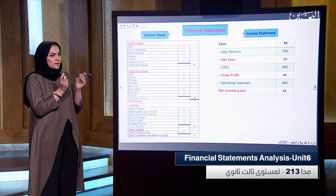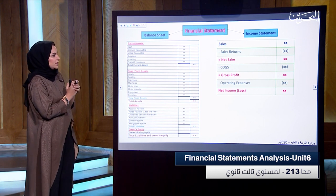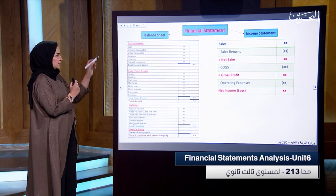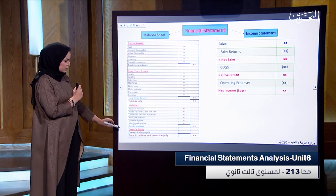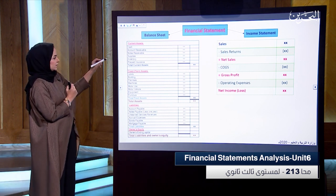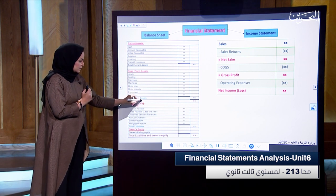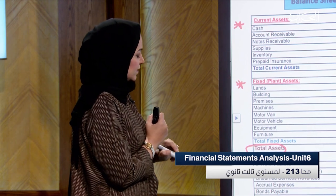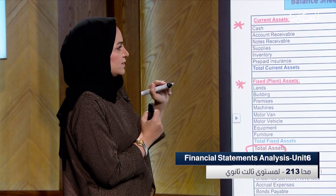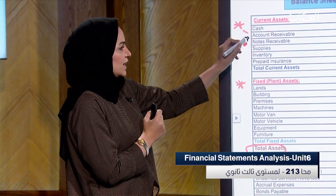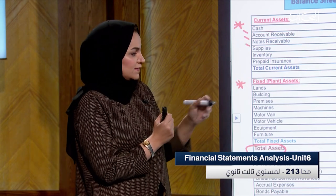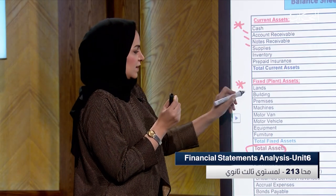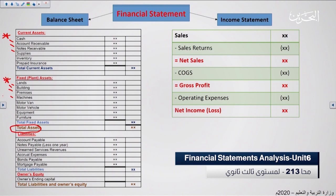What does financial statement mean? We already learned the balance sheet in Accounting 111. The balance sheet shows total assets equal total liabilities and owner's equity. Total assets include current assets — such as cash, accounts receivable, and notes receivable — and fixed assets like land, building, and machines. So total current assets plus total fixed assets equal total assets.